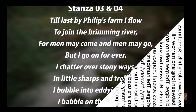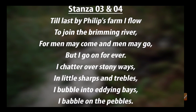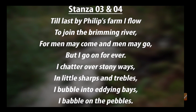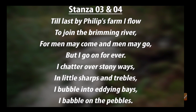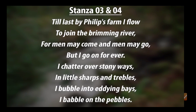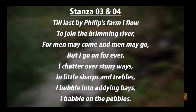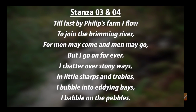The next stanza: 'Till last by Philip's farm I flew to join the brimming river. For men may come and men may go, but I go on forever.' The poet tells us about the merging point of the brook.